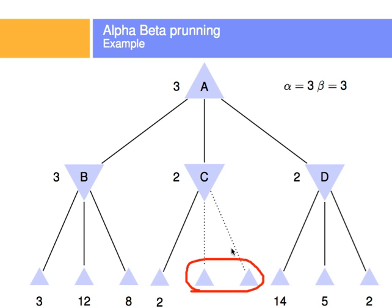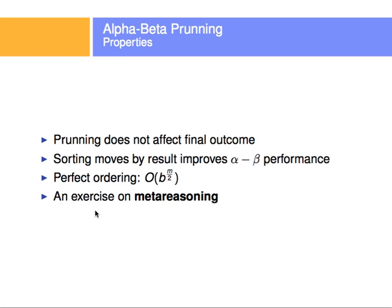A few things to note. If this subtree would have been sorted from 2, 5, and 14, we would have gone to 2, we would have returned because it was not greater than alpha. We would have returned immediately, and we would have also saved this subtree from happening. Now, when the trees are huge, these are big, big savings. In particular, pruning does not affect the final outcome.